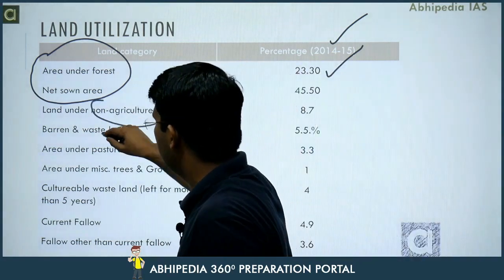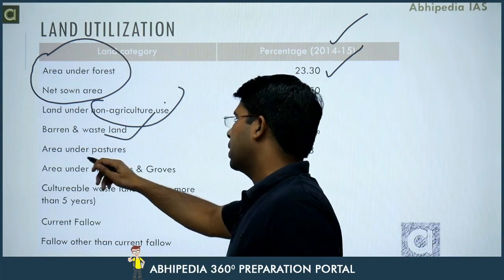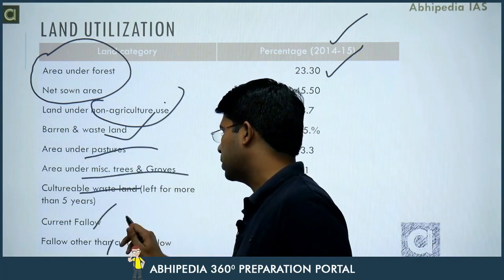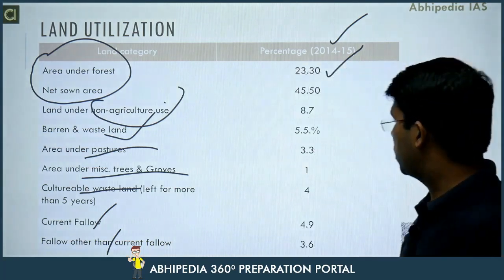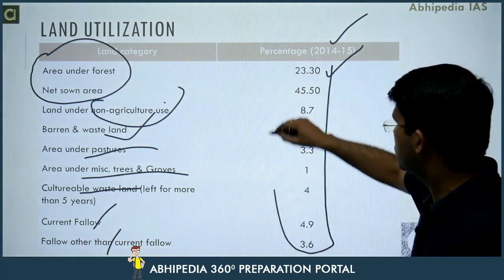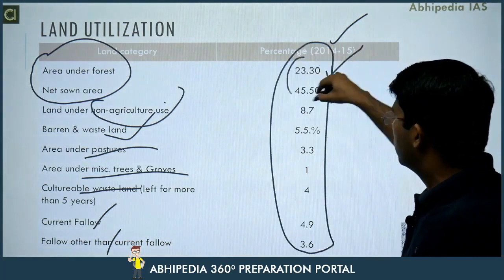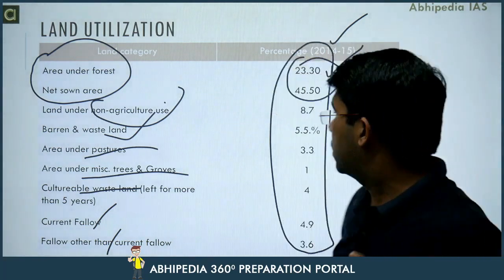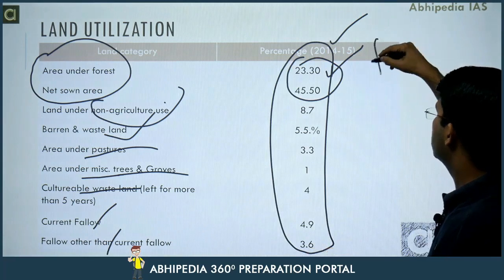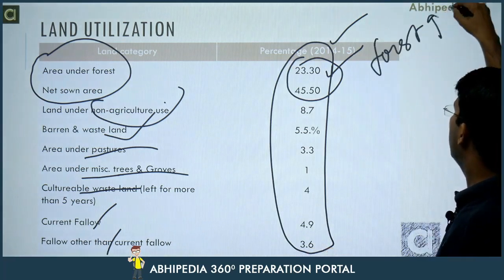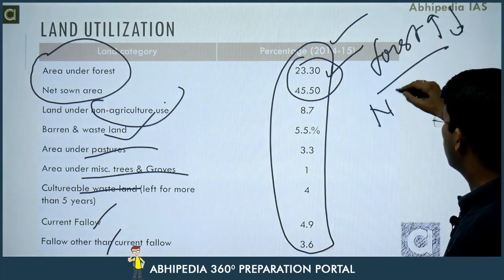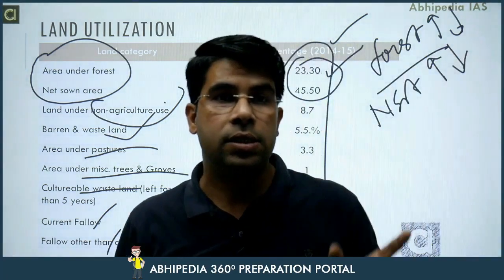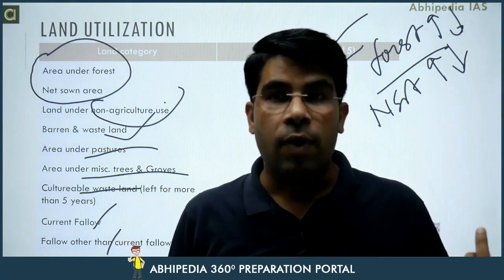You should be aware of these categories: land under non-agriculture use, barren and wasteland, pastures, trees and groves, current fallow, and other than current fallow. From the data you can see — is the area under forest increasing or decreasing? Is net sown area increasing or decreasing? You can see that the net sown area is decreasing. Why?